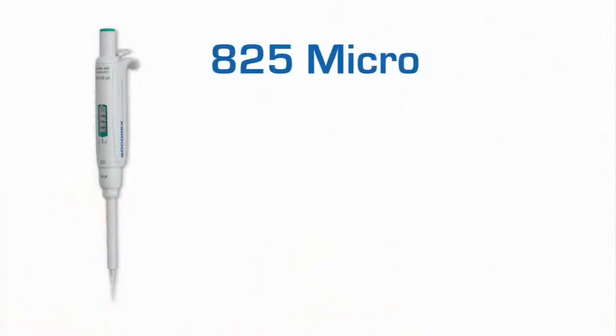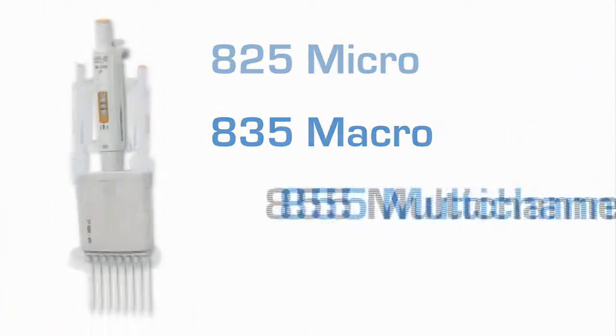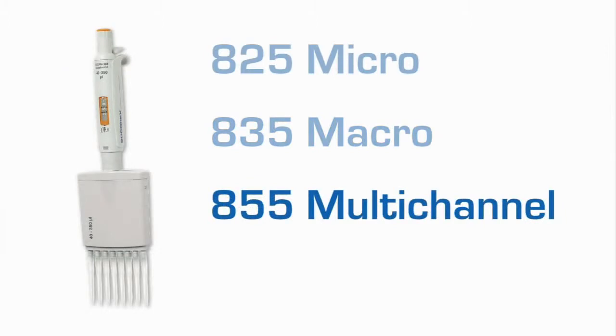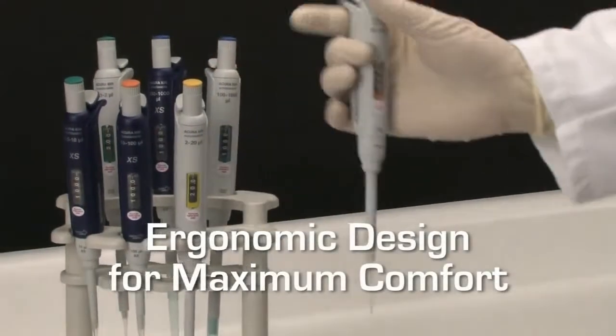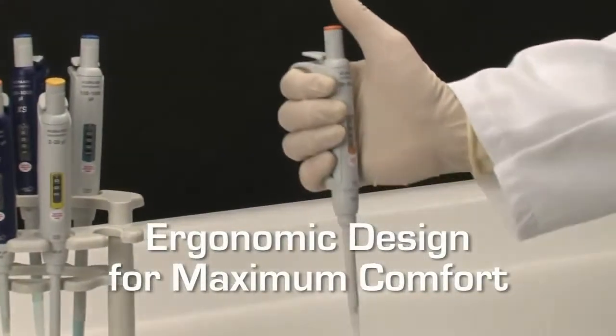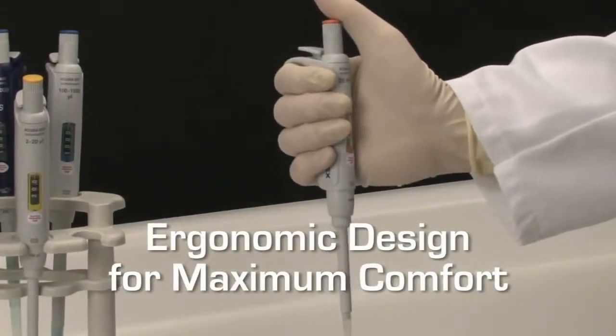Available in the well-known 825 micro, 835 macro and 855 multi-channel models and introducing the new 826 XS model for enhanced performance and research applications, Acura Manual Pipettes are designed and engineered to be comfortable and user-friendly as well as easy to maintain.